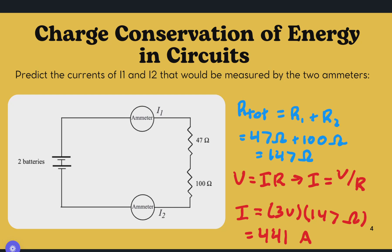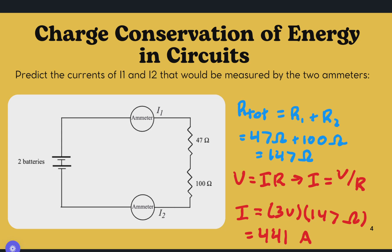So for charge conservation of energy in circuits, we wanted to predict the currents I1 and I2 measured in ammeters I1 and I2. We have two batteries, each 1.5 volts, giving a total of 3 volts. R total equals R1 plus R2, where R1 was 47 ohms and R2 was 100 ohms, giving 147 ohms total. Using V equals IR, I equals V over R, and so I, after calculations, is 0.02 amperes.